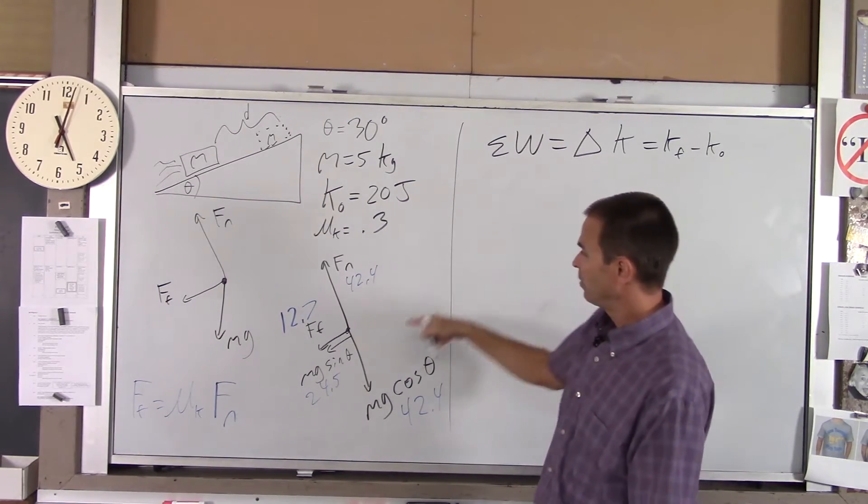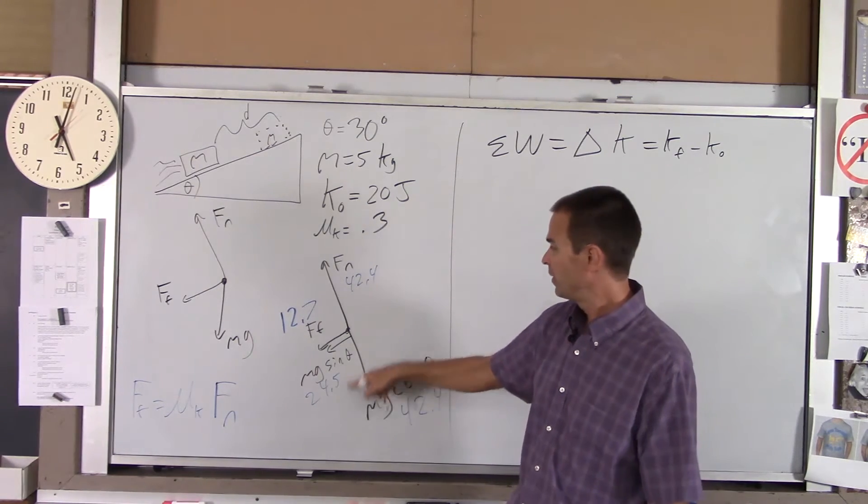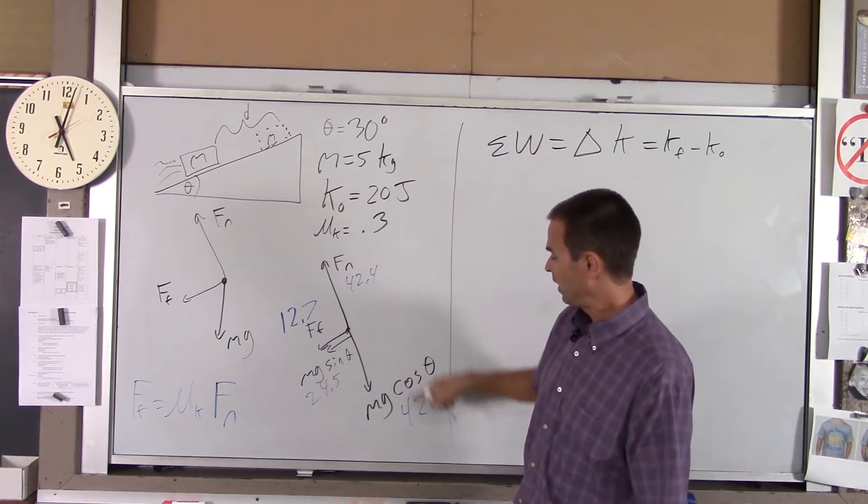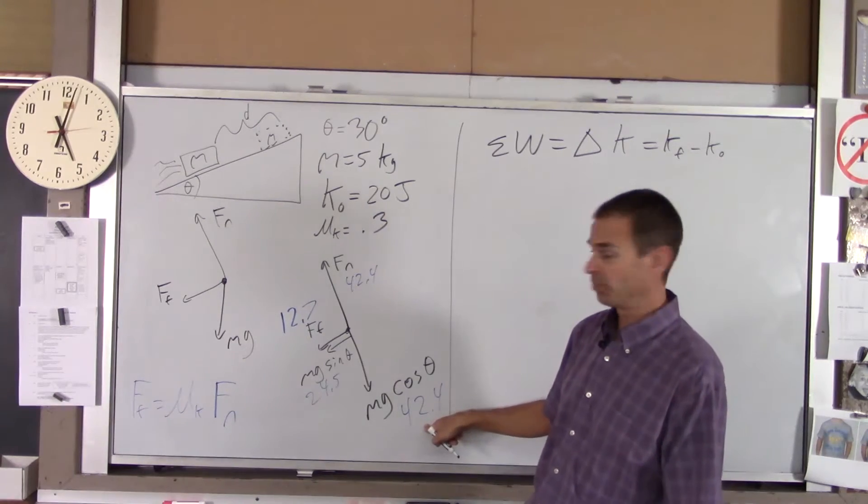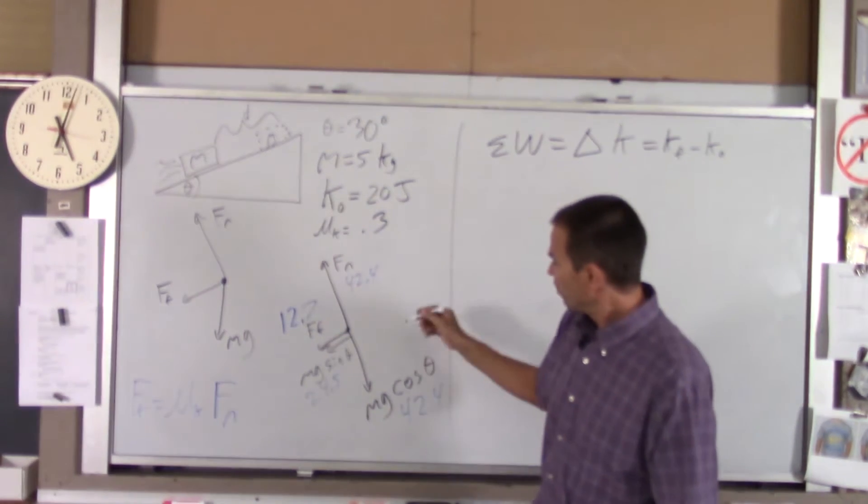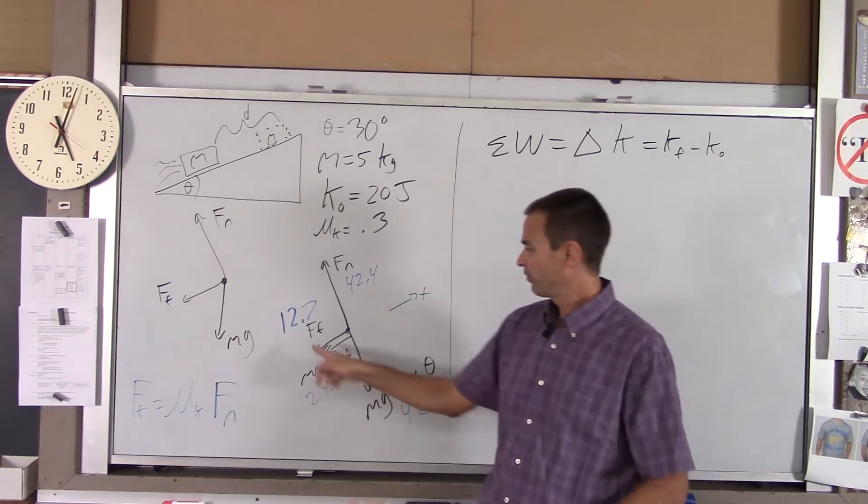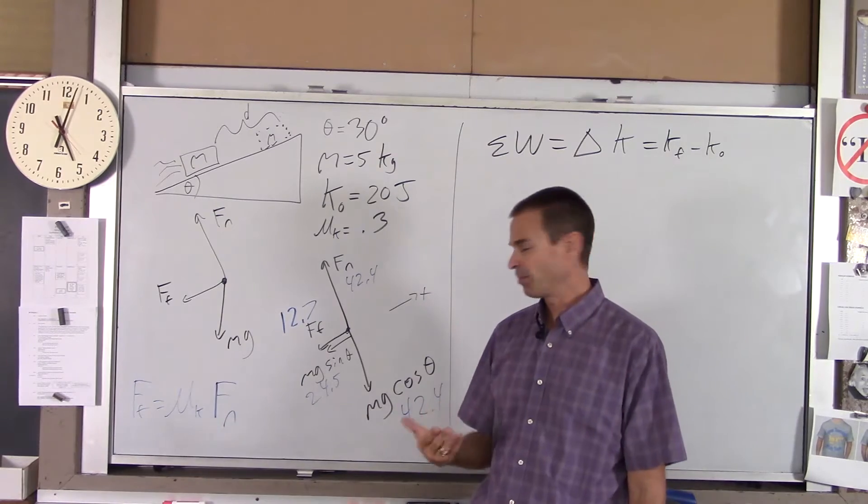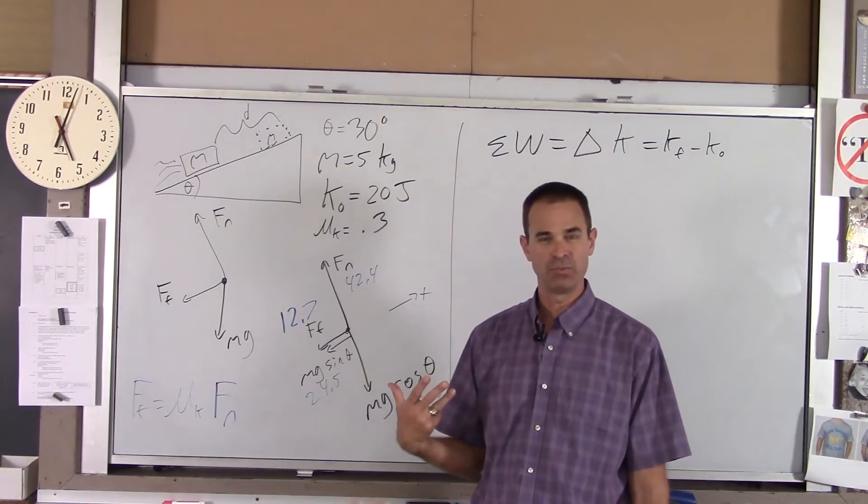The network, well, that's going to be the work done by friction and the work done by this component of gravity. The normal force and this component of gravity don't do any work, because they are both perpendicular to the motion. So all I have to worry about is these two guys. The motion is up the hill. Both friction and Mg sin theta oppose that motion.